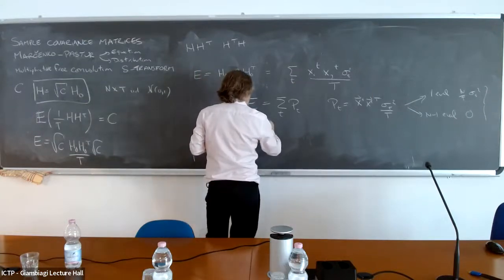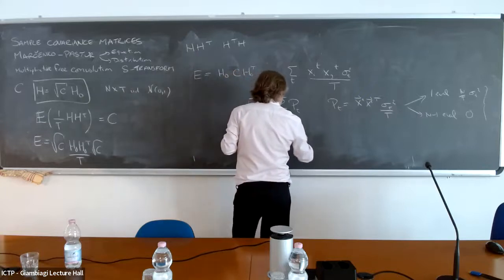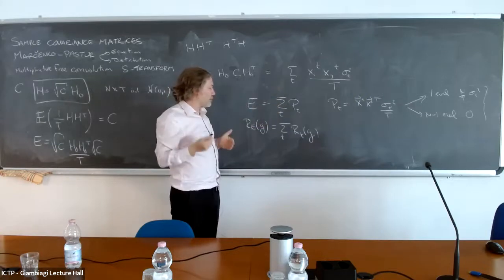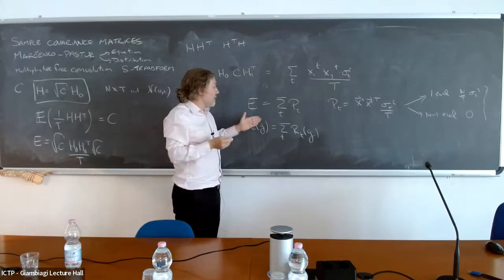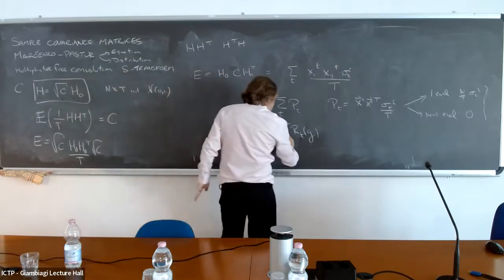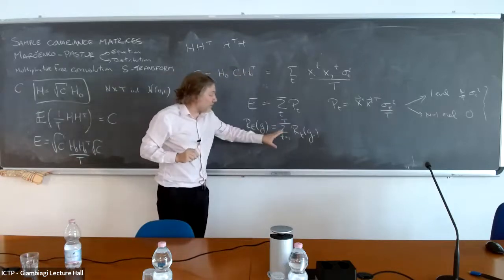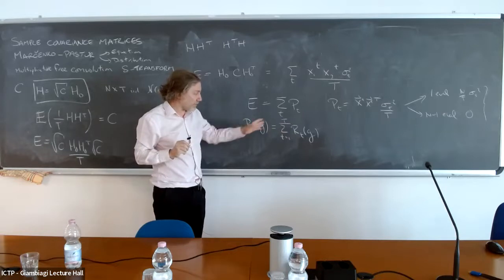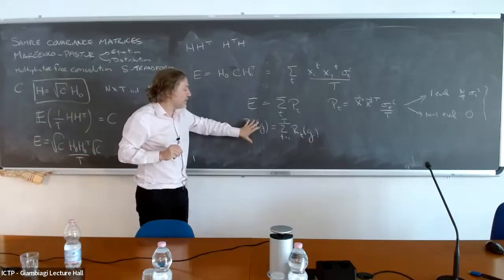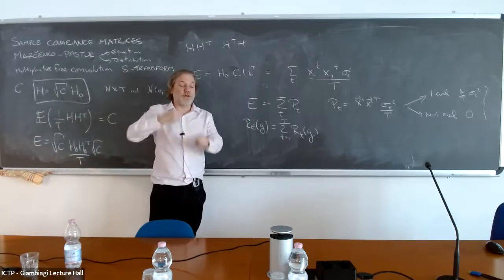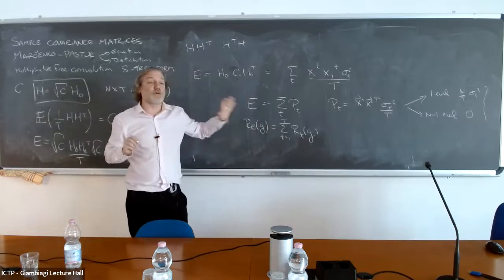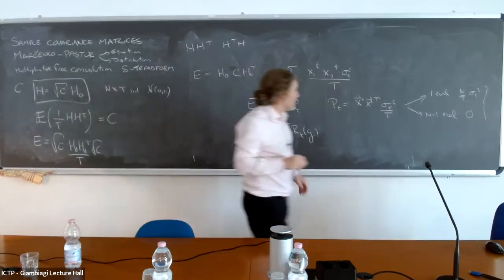Using the freeness I rushed through in the last lecture, I can compute the spectrum of E because I can compute the R-transform of E. The R-transform evaluated at point G will equal the sum over t of the R-transforms of each of these matrices. I have a sum of rotation-invariant matrices, so the R-transform is additive. It's additive two by two, but since each is rotation invariant, I can keep adding. I'm adding T rotation-invariant matrices, so if I can compute the R-transform of each projector, I can compute the R-transform of the sample covariance matrix.